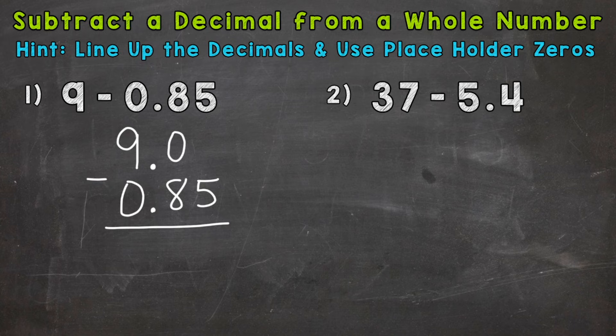So both of these numbers go to the hundredths place. Now I can place zeros to the right of a decimal because it doesn't change the value of that nine. I didn't change the problem at all. That nine still has a value of nine.